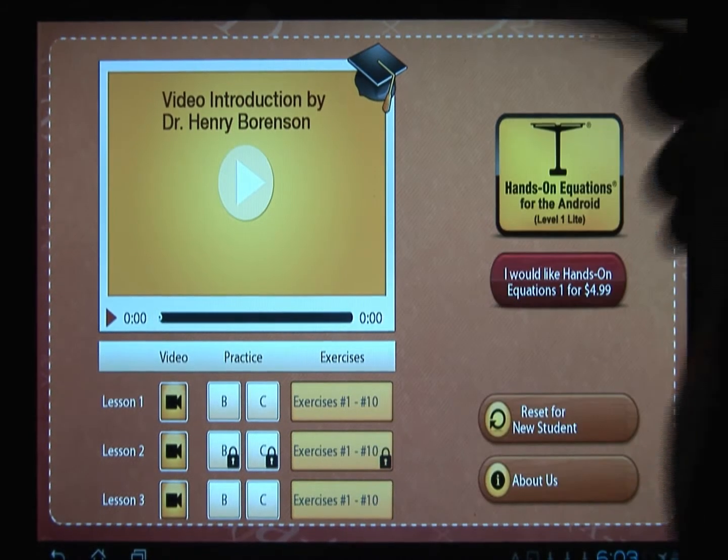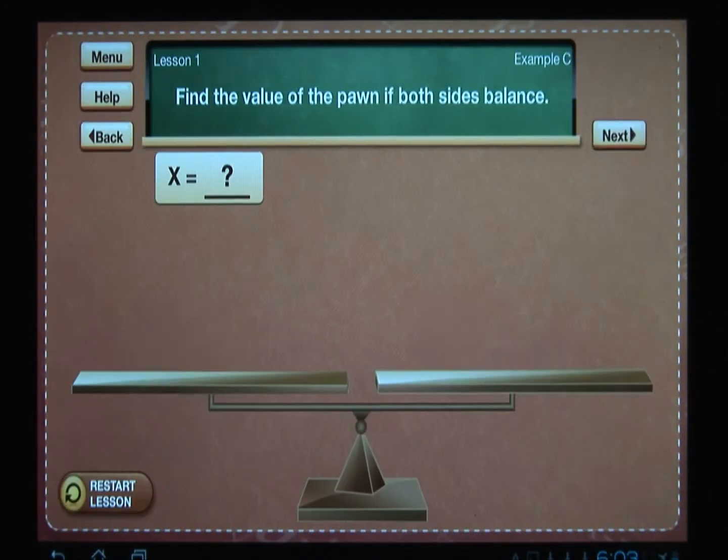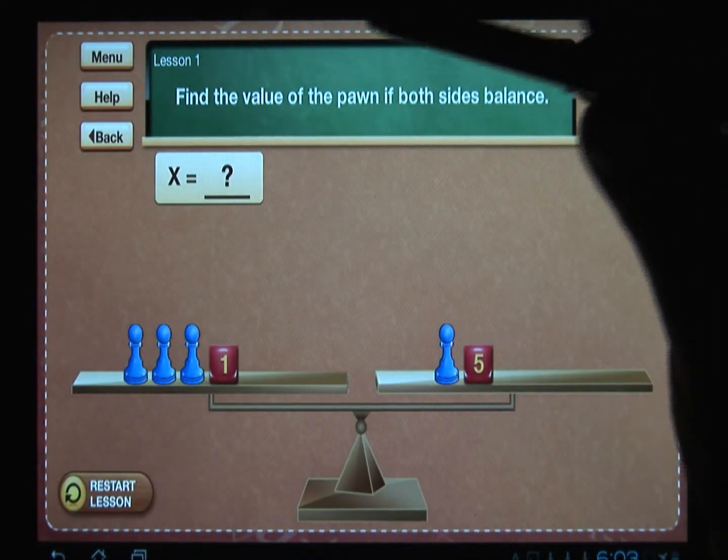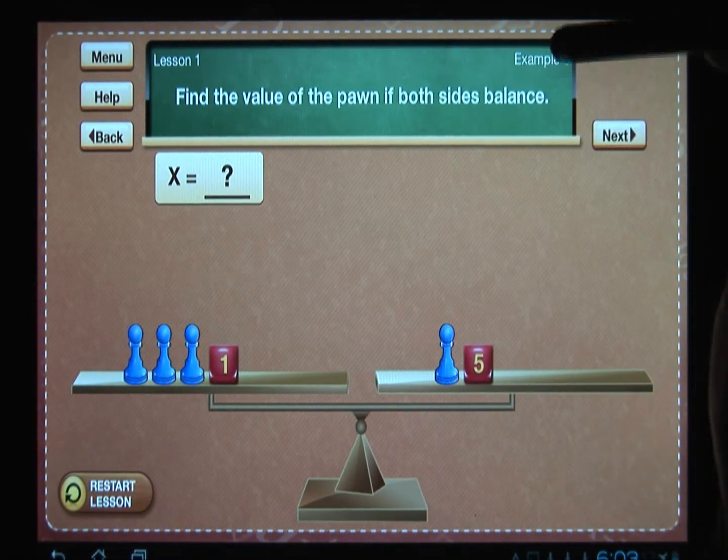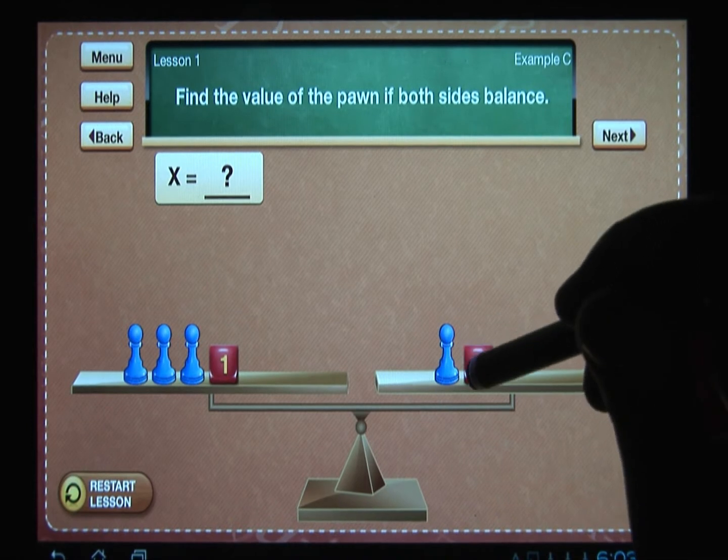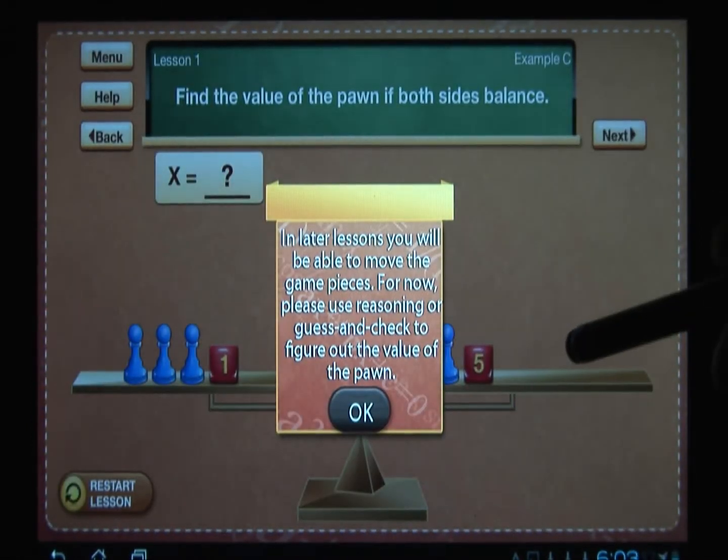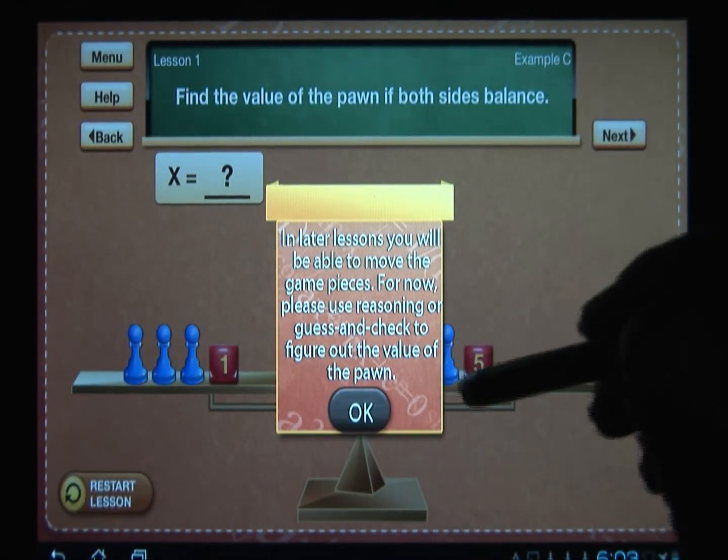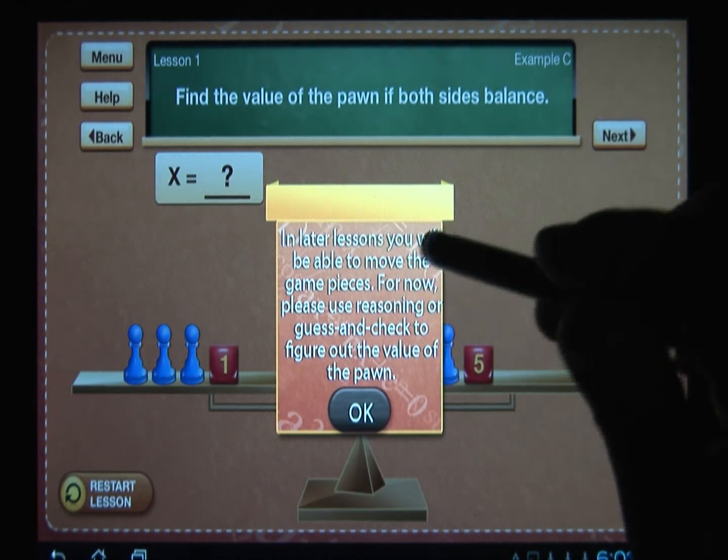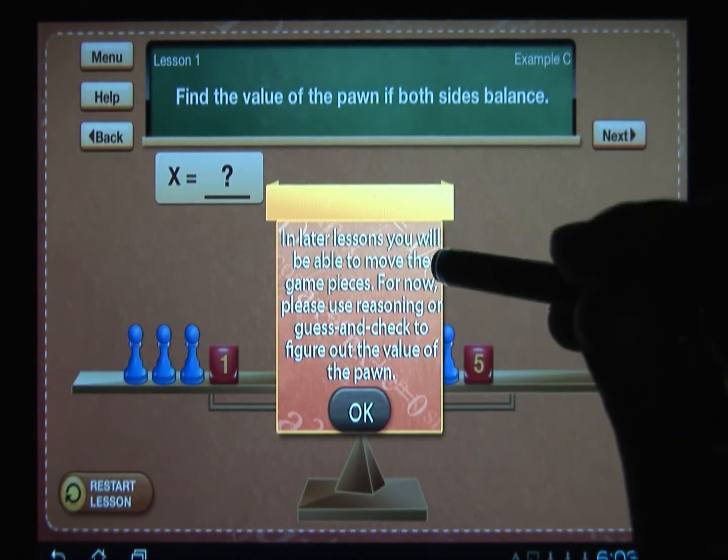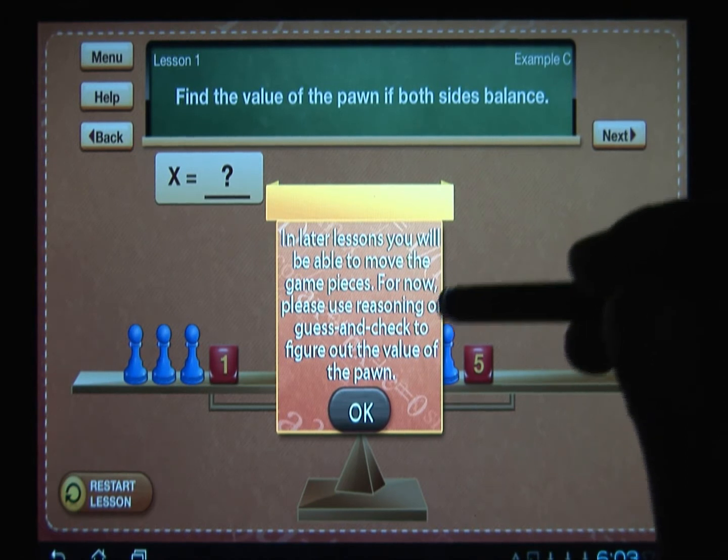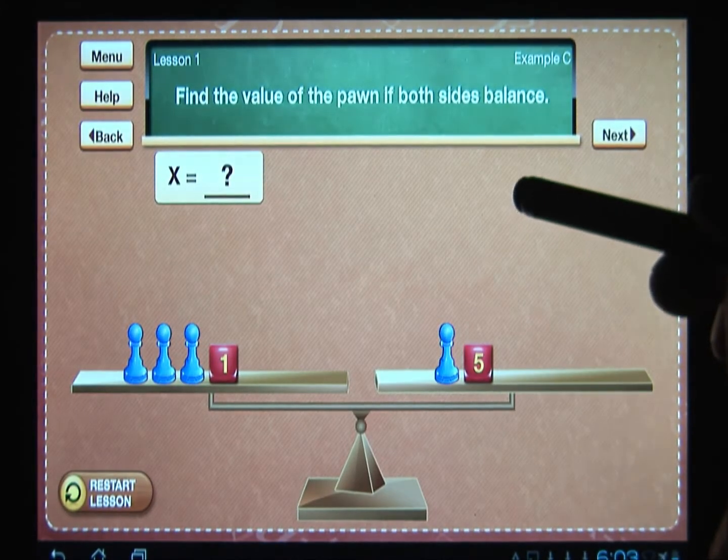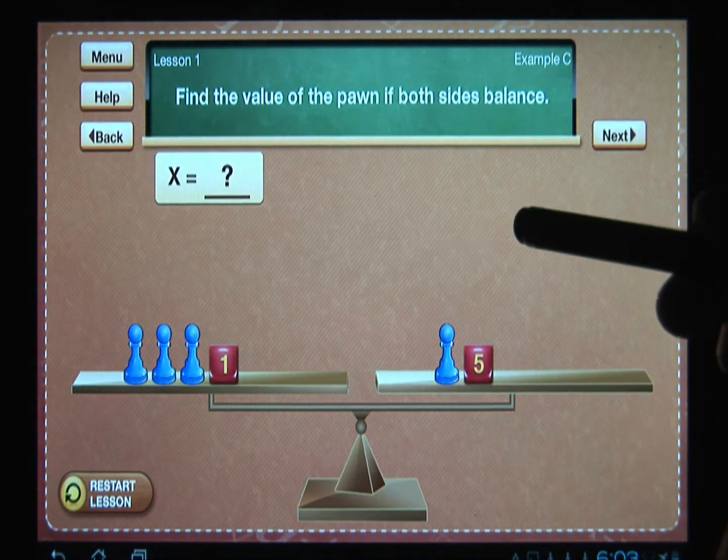Let's look at example one. We're told to find the value of the pawn if both sides balance. Now if you try to move these game pieces in lesson number one, you will get a pop-up. It says in later lessons you will be able to move the game pieces. For now please use reasoning or guess and check to figure out the value of the pawn.